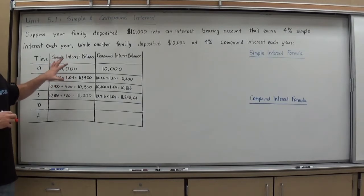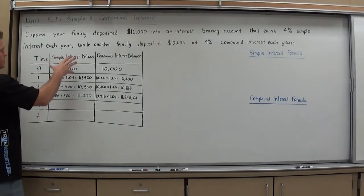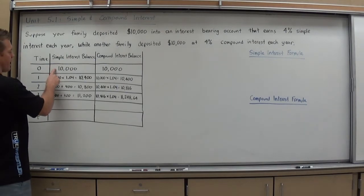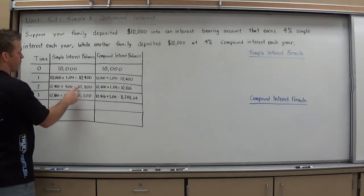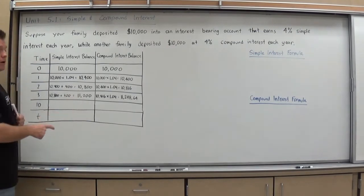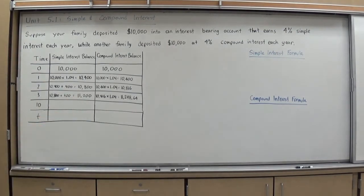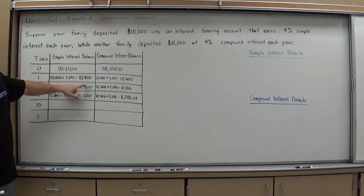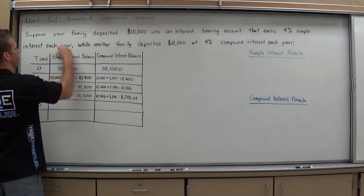So let's start by examining the balances. If I look at the simple interest balances, they're starting at $10,000, and it's going up by $400, up by $400, up by $400. If we think back to the last chapter, we learned about sequences. If I had a sequence that was always adding $400, it would be an arithmetic sequence. And that's what simple interest is.